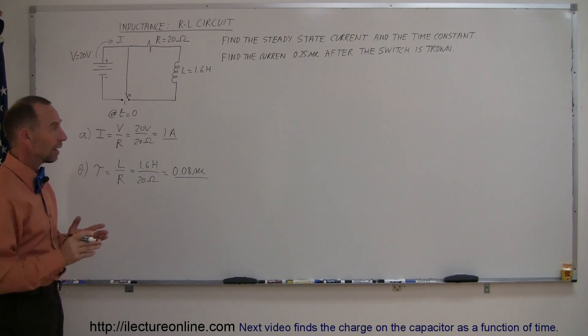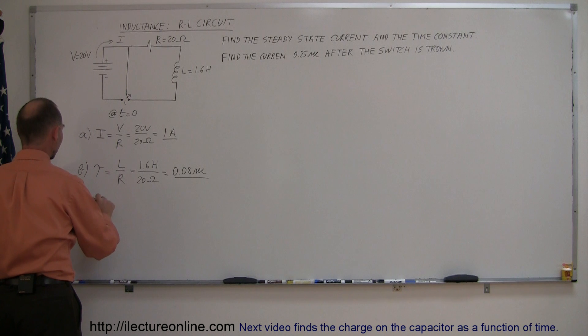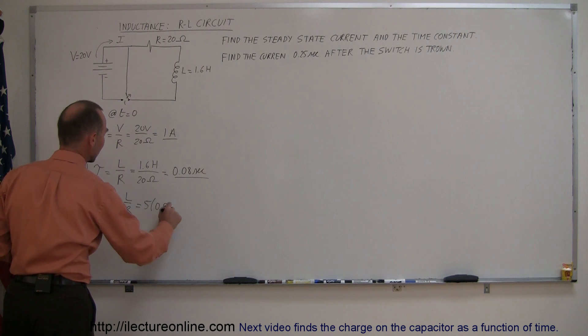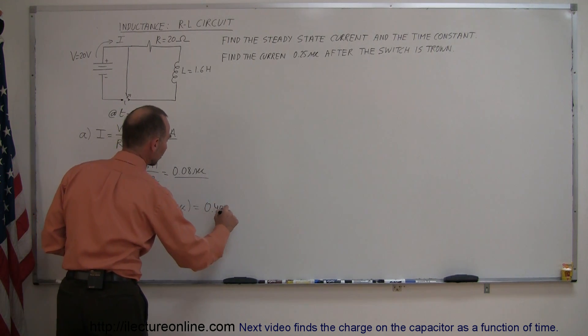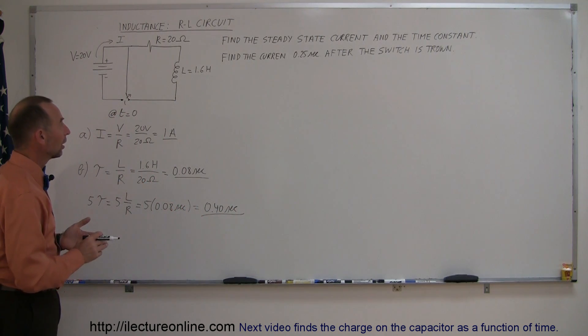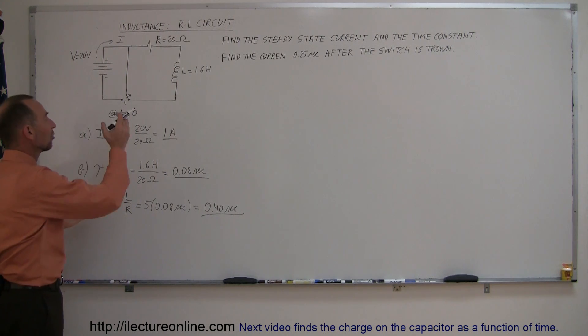If we now find out how long it will take for the current to almost go completely to zero, we can say that five time constants is equal to five times L over R which is equal to five times 0.08 seconds, which is equal to 0.40 seconds. This means that the current will continue to flow until it's reached almost zero for another 0.4 seconds after the switch is thrown.